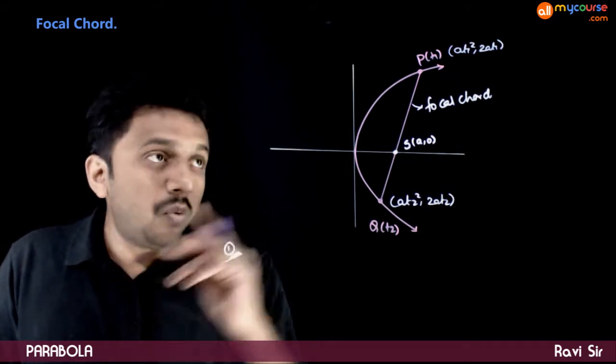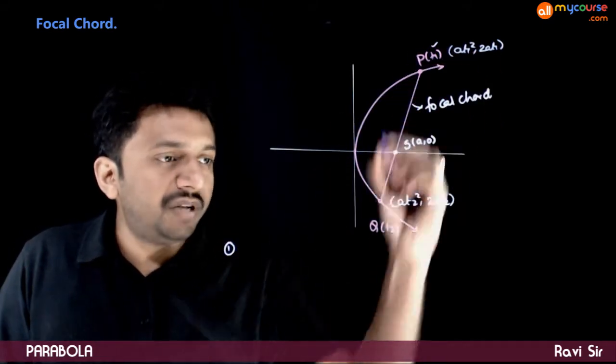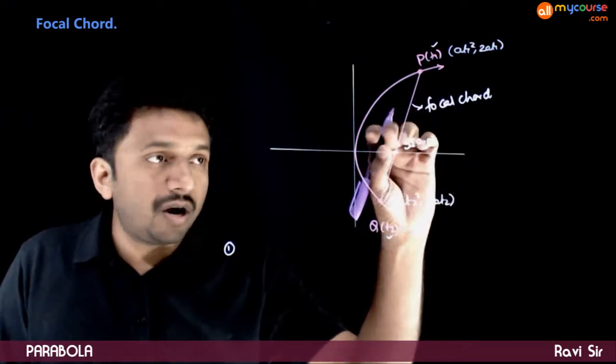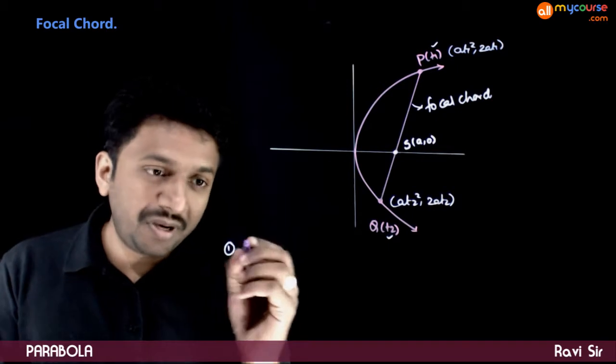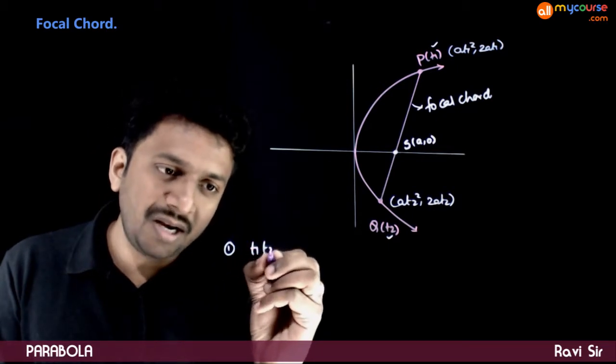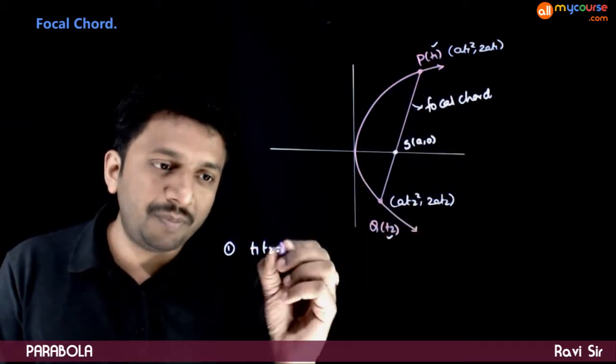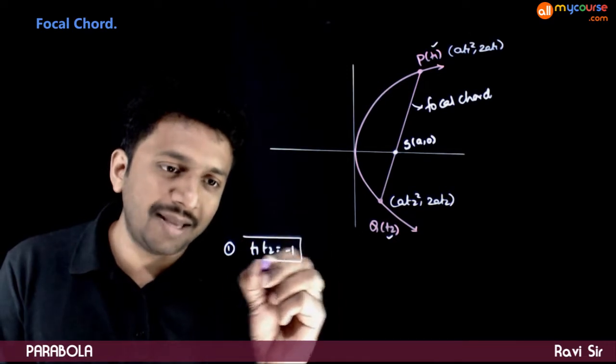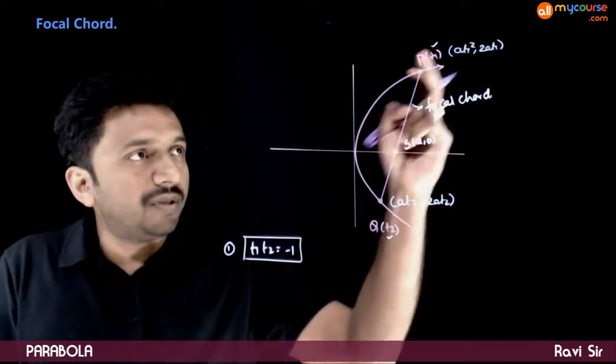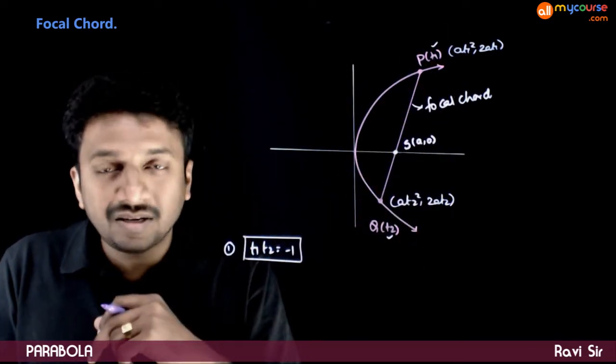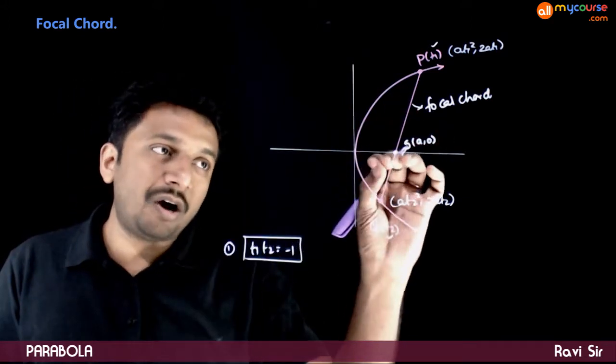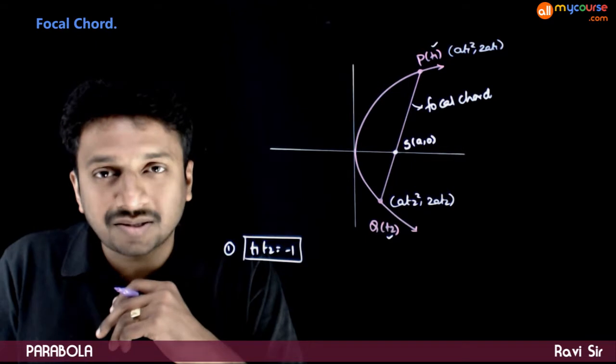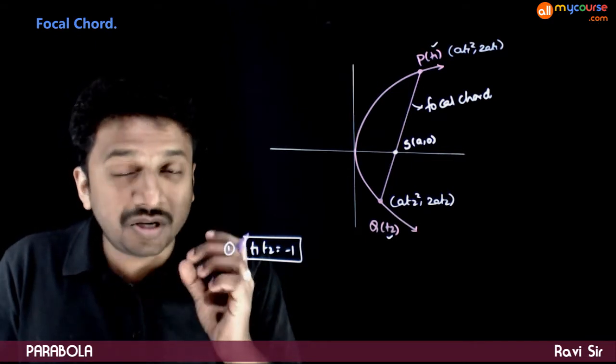So first, what should happen in terms of t1, t2 if this chord has to pass through the focus? The property says that t1 into t2, the product of the parameters, has to be equal to minus 1. If the product of these two parameters is minus 1, then the chord will automatically pass through the focus. This is the most important property. So let us see why this is happening.